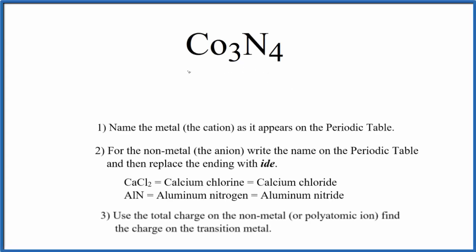In this video, we'll write the name for Co3N4. First off, we need to recognize that Co - this is cobalt, this is a transition metal, and then N - that's a non-metal. So we have a transition metal and a non-metal here.